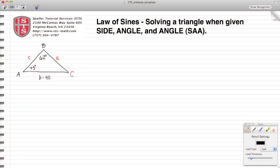Welcome back to Speller Tutorial Services. Today we're going to work with the Law of Sines and what we're going to do is solve the triangle that we see here by filling in all of the missing information: side a, side C, and angle C.